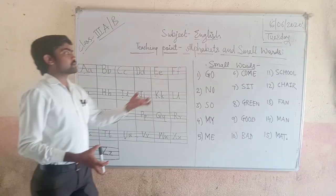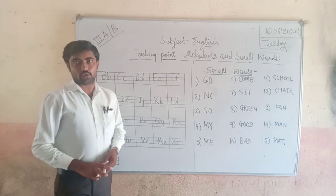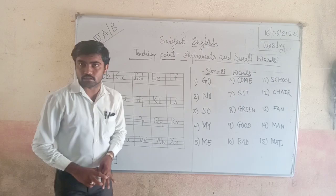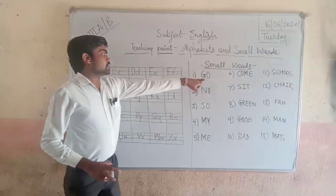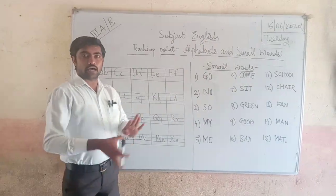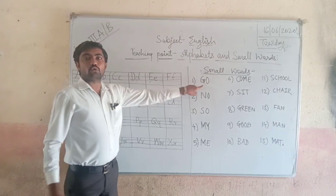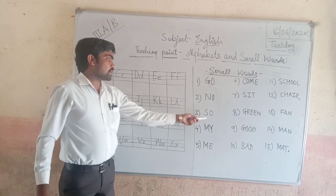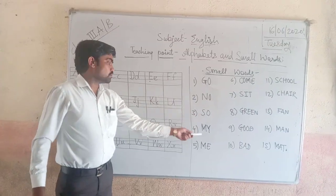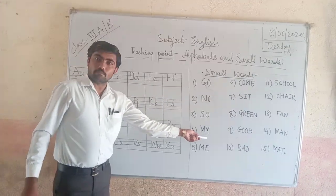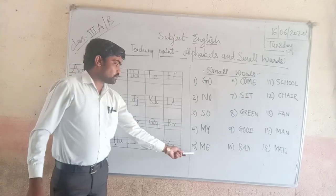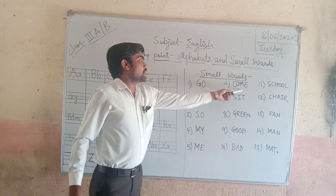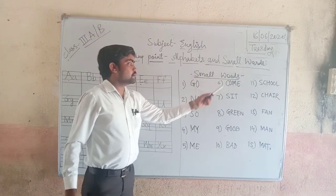Now we are going to take some small words in English. Today we will take 15 small words. First: G-O, go. Second: N-O, no. Third: S-O, so. Fourth: M-Y, my. Fifth: M-E, me. Sixth: C-O-M-E, come.